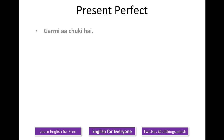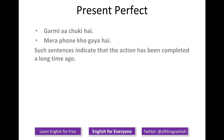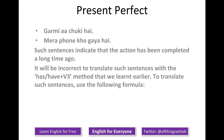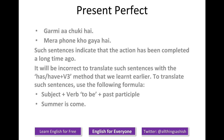Let's look at another aspect of present perfect. 'Garmi aa chuki hai.' 'Mera phone kho gaya hai.' In such sentences, what we are indicating is that the action was completed a long time ago. It will be incorrect to translate these sentences with the has/have plus V3 method. Instead, use: subject plus verb to be plus past participle. For example: summer is come. My phone is lost.